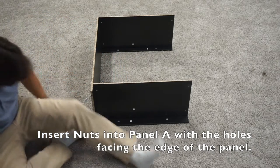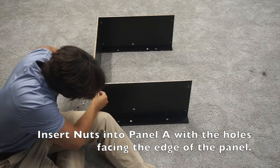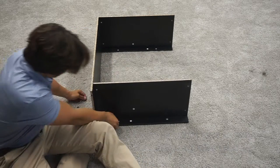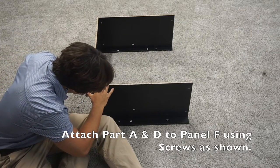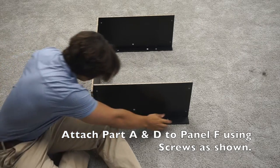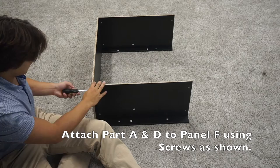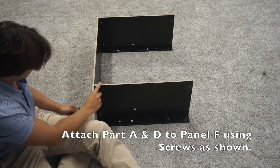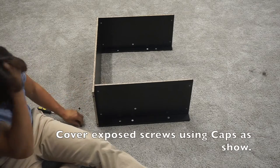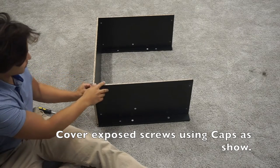Then you will want to insert your two nuts into the A panel, and then you can insert the screw into the F into the A and tighten it down. Once you have secured it, you can attach the caps to cover up the screws.